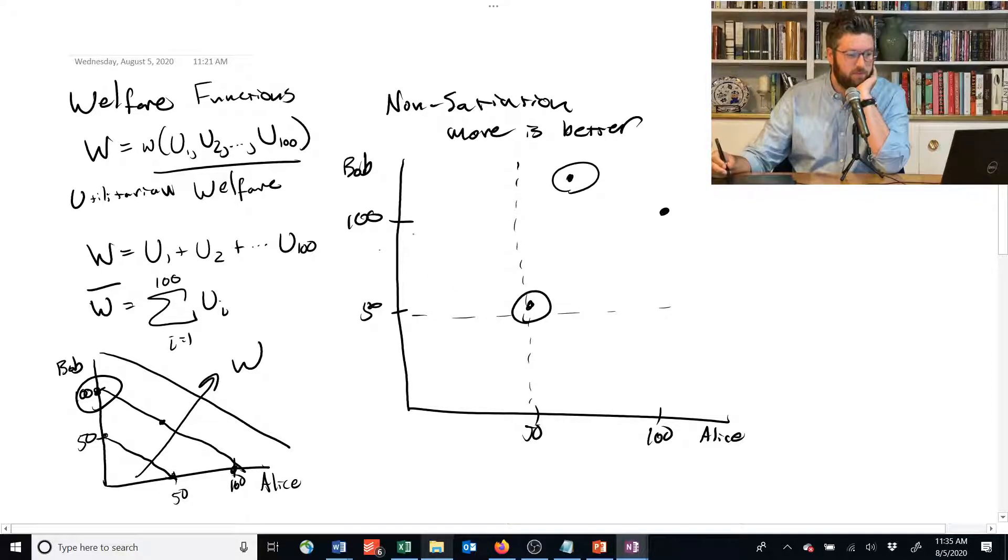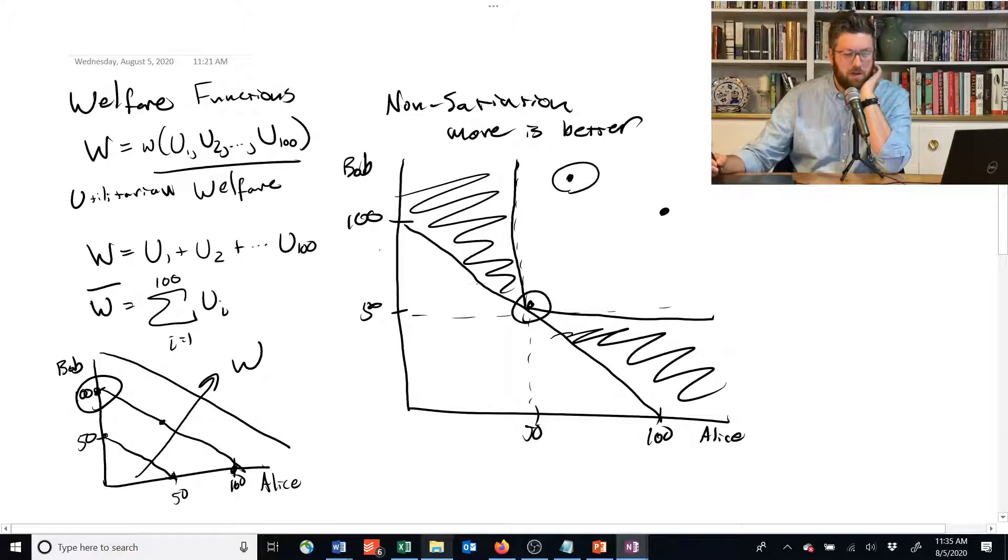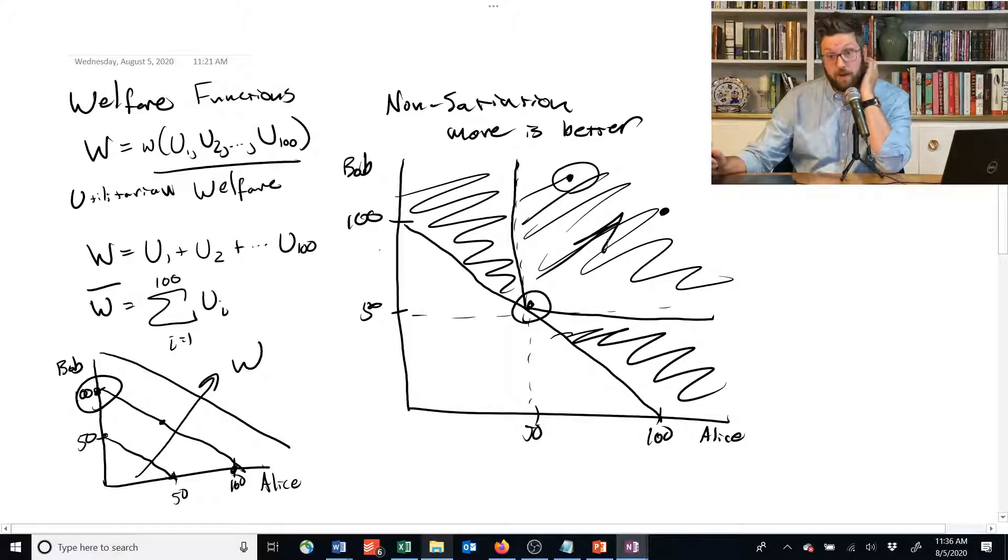So whether we have perfect substitute-style welfare function, which is a straight line, whether we have the polar opposite of perfect complements, Rawlsian utility, all of those guys disagree on what's going on in here. But they all agree that this box over here is where we want to go. We want to be moving up and to the right.